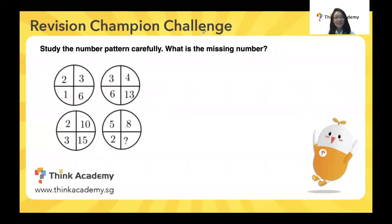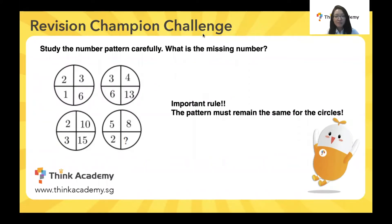For this question, it says study the number pattern below — what is the missing number? This tells us it's a number pattern question. For number pattern questions, the most important rule to remember is that the pattern must remain the same for all the circles. The pattern we find in our first circle must also be the same for our second circle, third circle, and last circle.